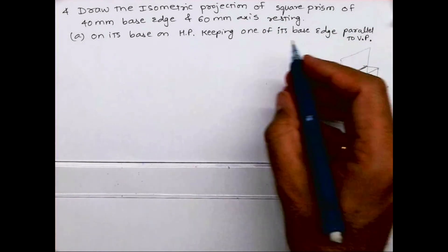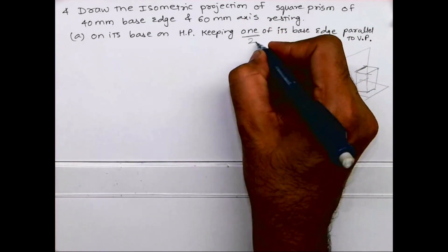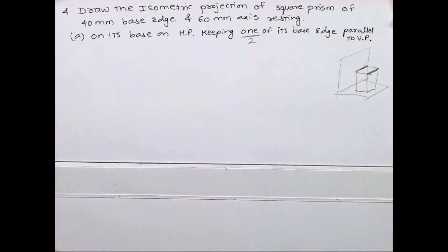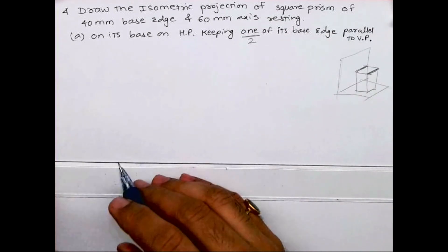See, this is one. So instead of one they can ask you two also, because in a square it will be automatically two. So either they will write one or two. Just make sure that you check.